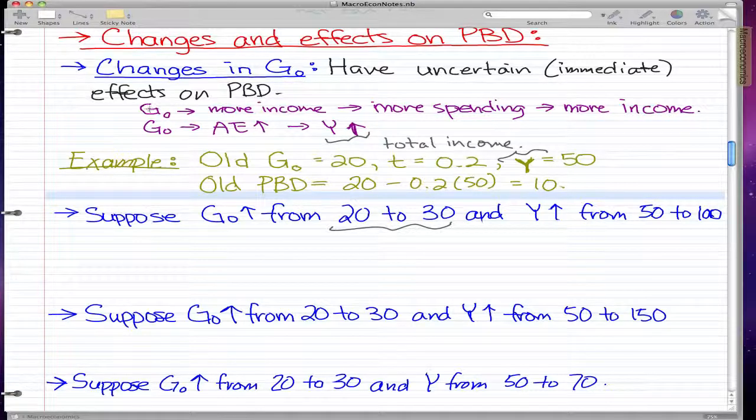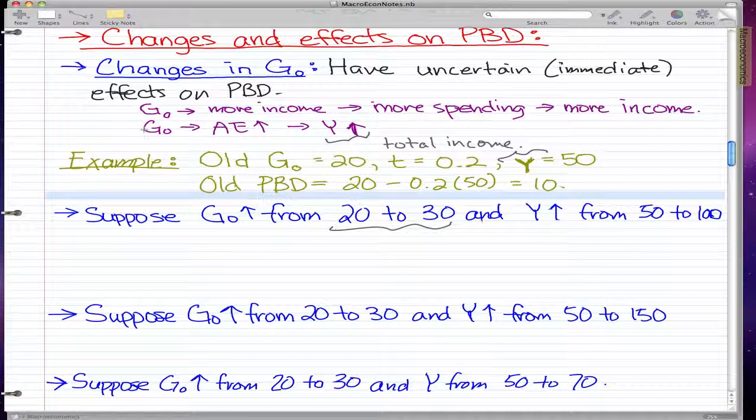Government spending implies more income, which implies more spending by everybody, which implies that we have more income at the end in the economy. This reflects the point that government spending implies increased induced autonomous expenditure, which implies an increase in total income.